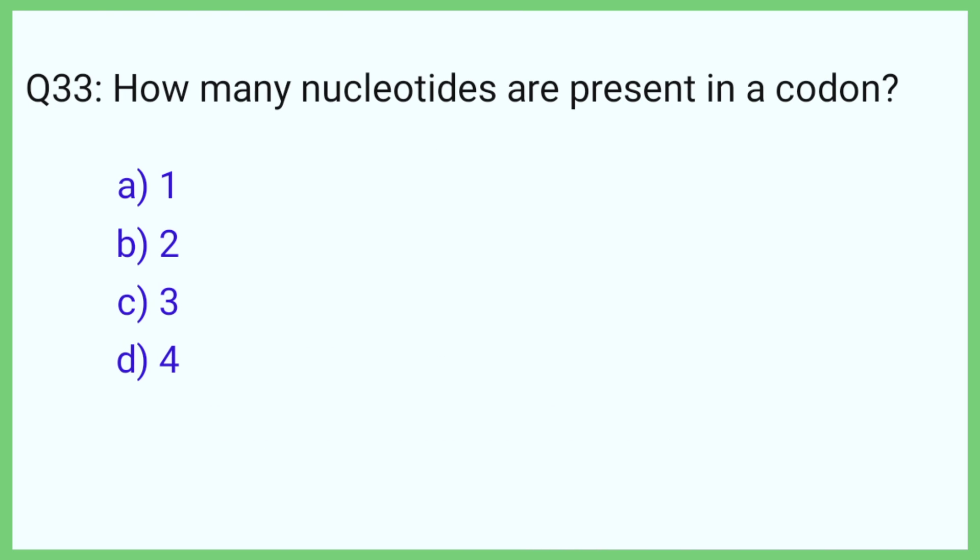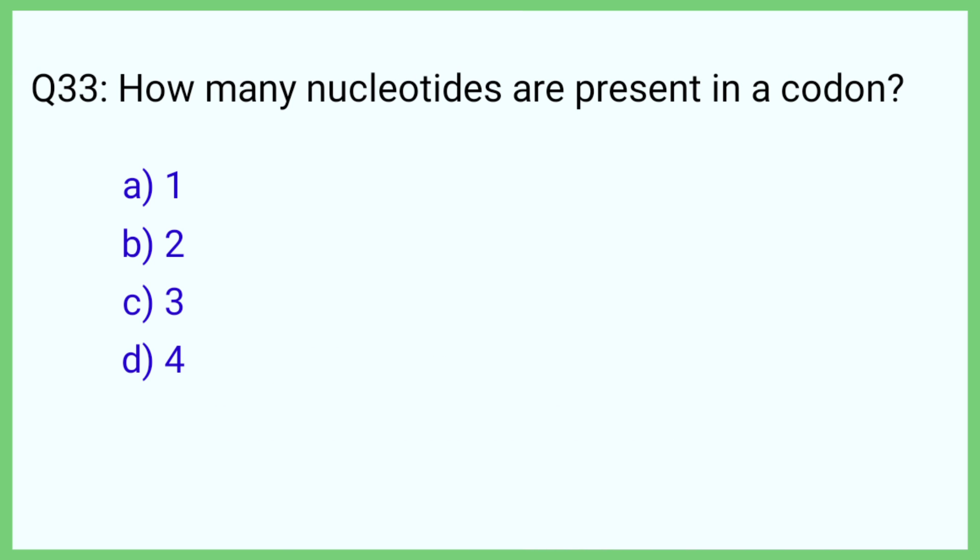Question number 33. How many nucleotides are present in a codon? The correct answer is option C: 3.